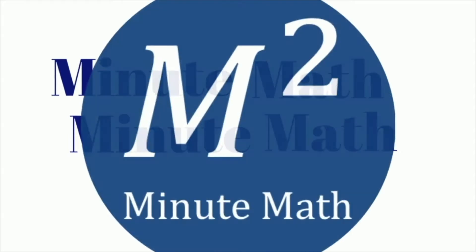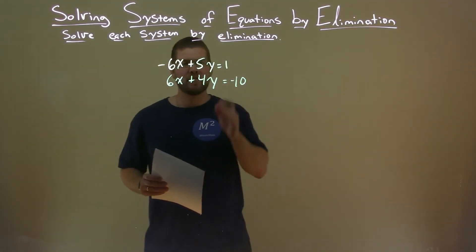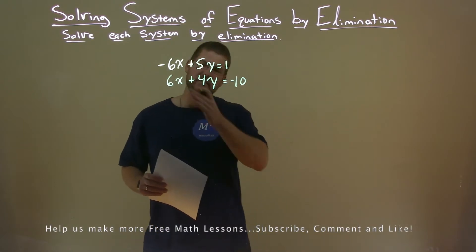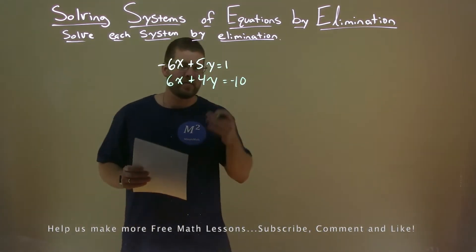When you need help, you use MinuteMath. So we're given negative 6x plus 5y equals 1, and 6x plus 4y equals negative 10. We're solving this by elimination.